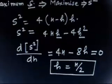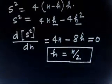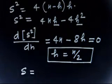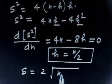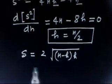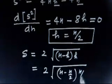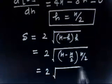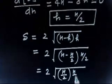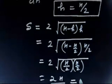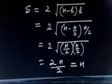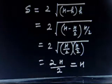This result you can remember: small h should be half of capital H. Plugging h = H/2 into the expression for S: S = 2√((H − H/2)·(H/2)) = 2√(H/2 · H/2) = 2·(H/2) = H. So the maximum displacement reached by the disk is H.